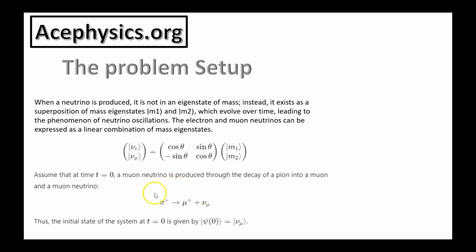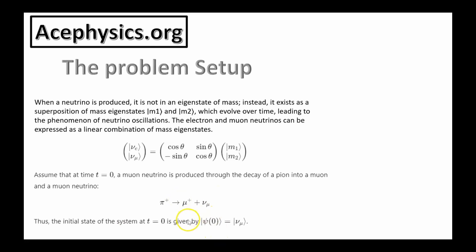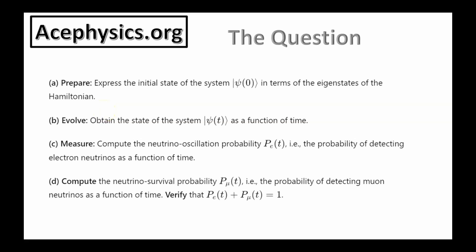This question discusses this example. Assume that at t equals 0, a muon neutrino is produced through the decay of a pion into a muon and a muon neutrino. The muon neutrino has a much smaller mass than the muon, about 1% or less. At t equals 0, it starts out in the flavor state of the muon neutrino. Here's the question — it's a four-part question, and I'll solve it on the next slides.